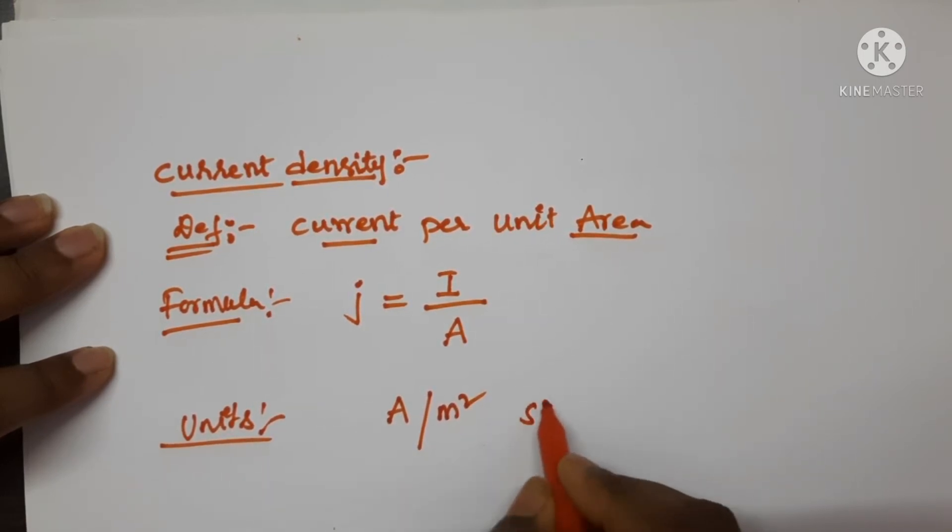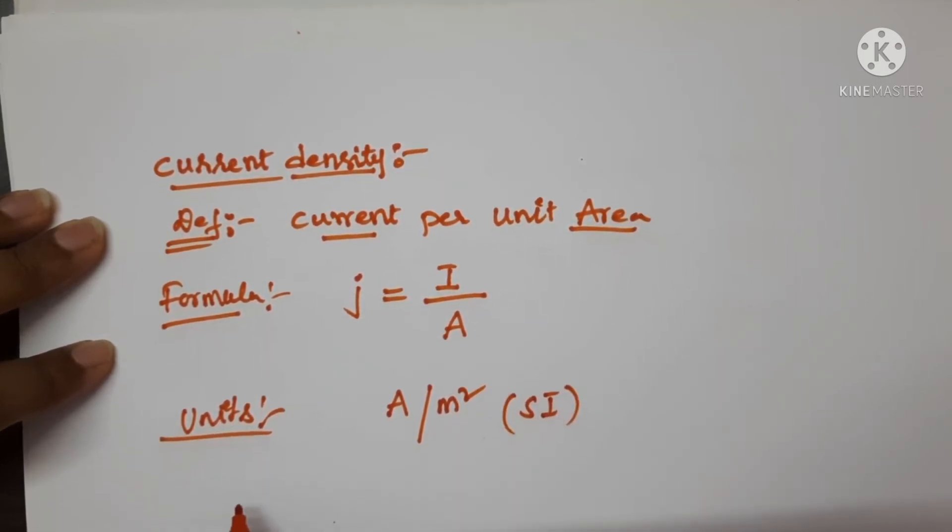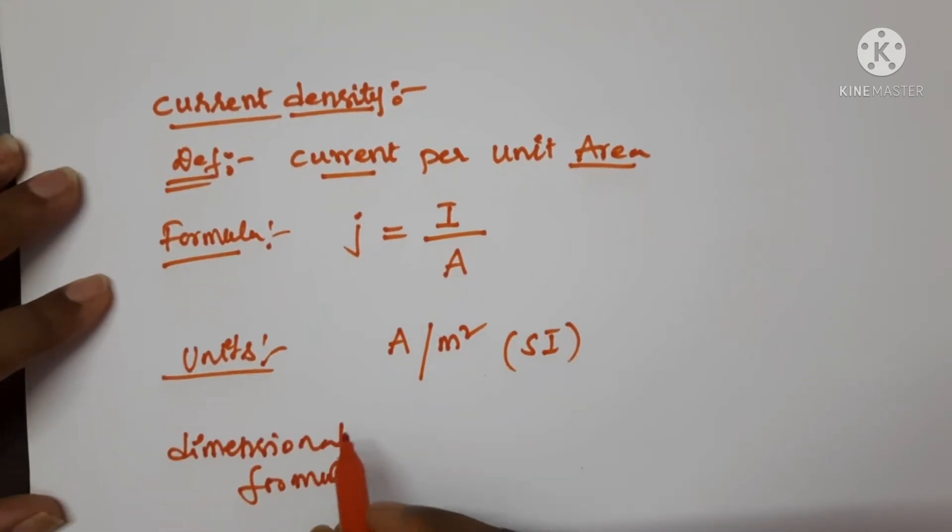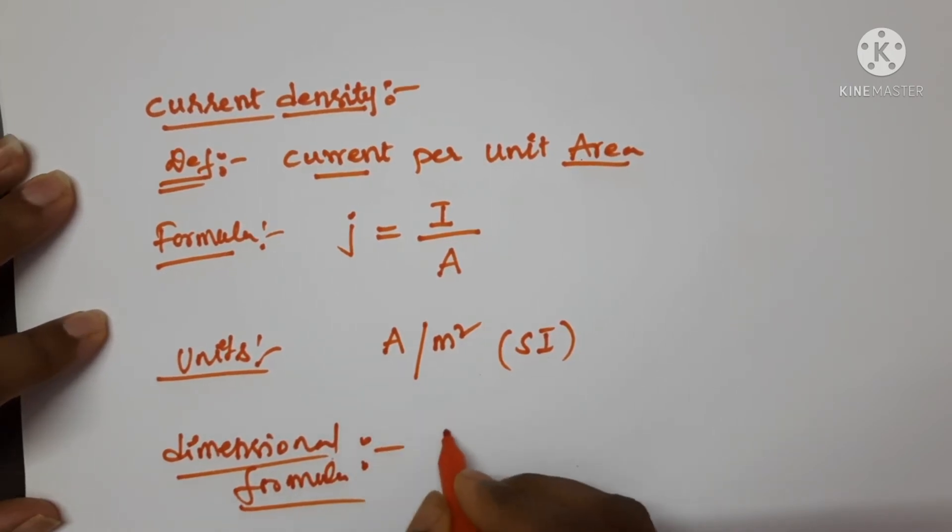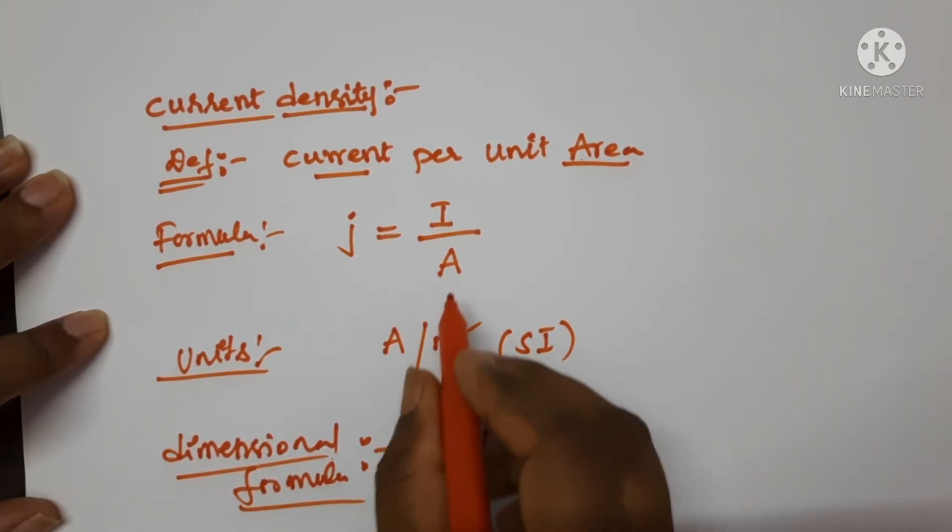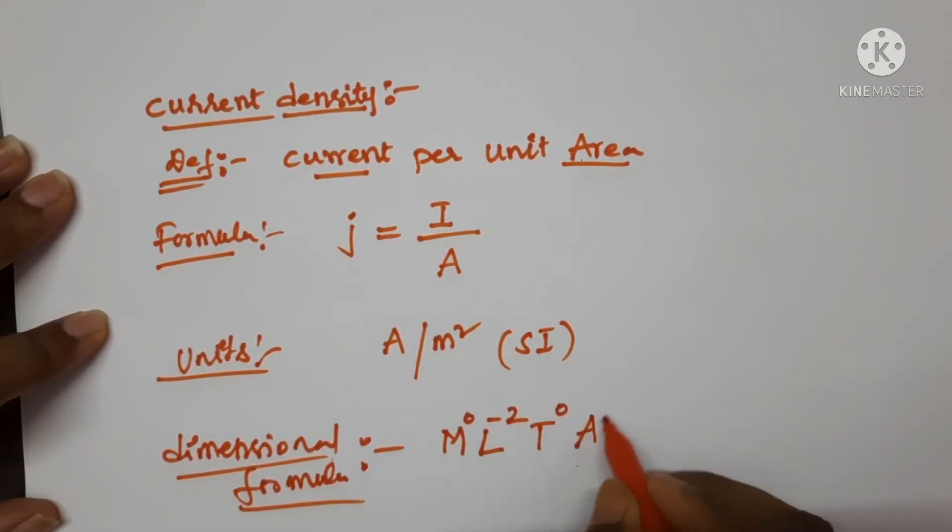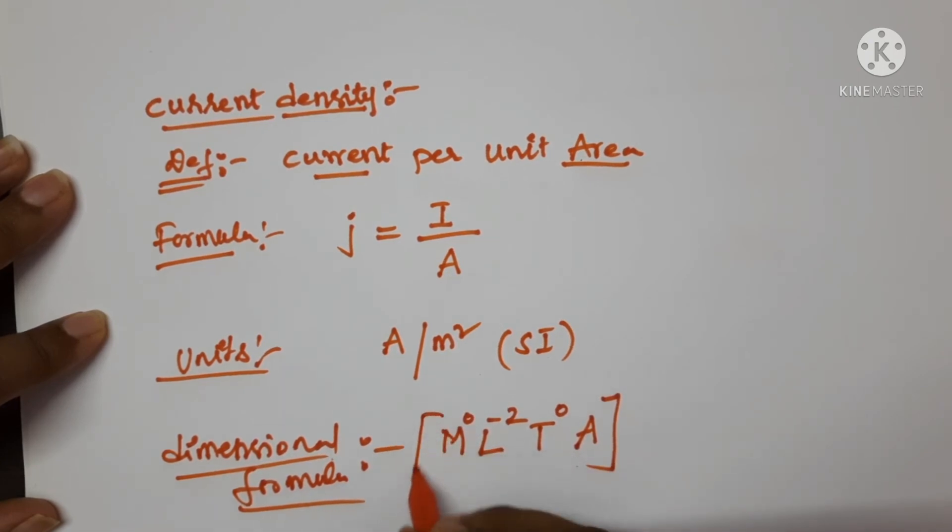This is the SI unit of current density. Let us see the dimensions. Dimensional formula of current density is: mass term is absent so M power 0, length is L power negative 2 since area is expressed in terms of length squared, time term is absent so T power 0, and current is A. This is the dimensional formula of current density.